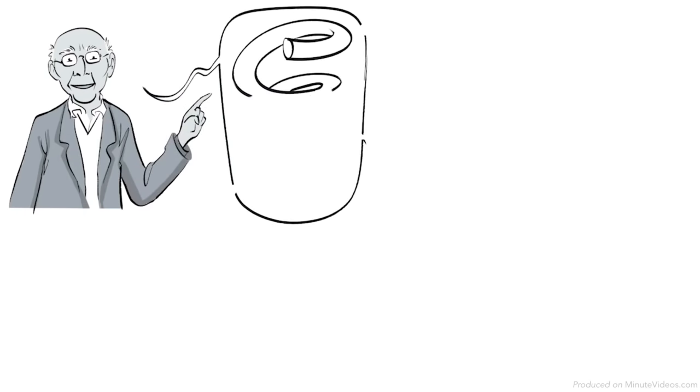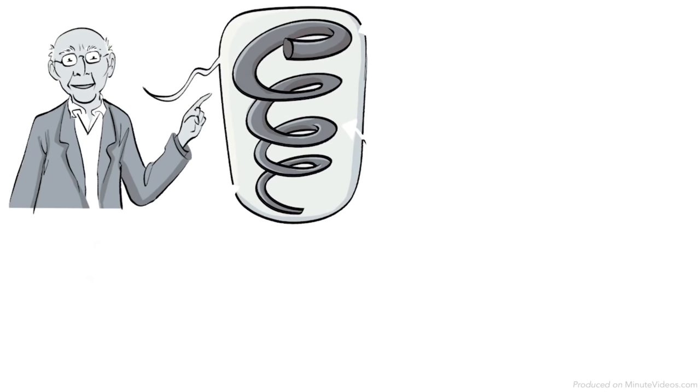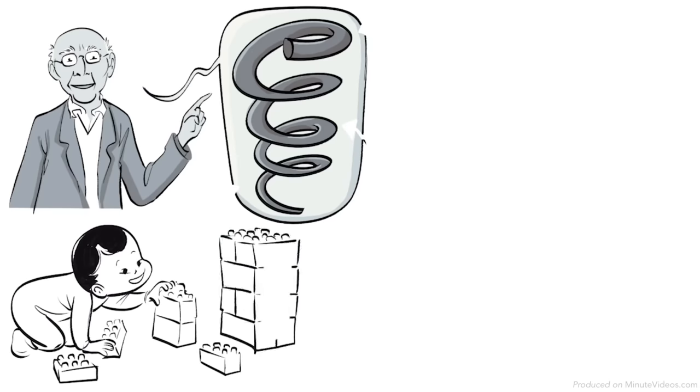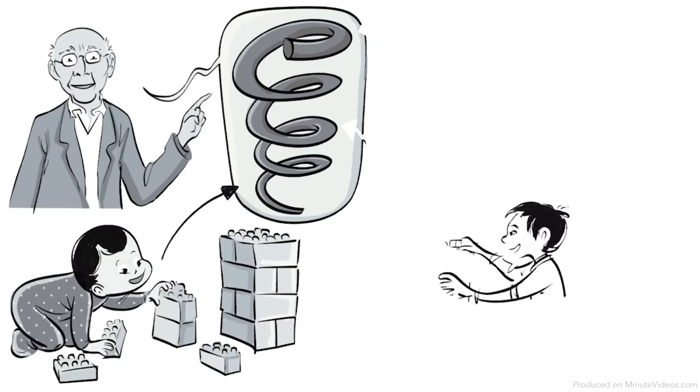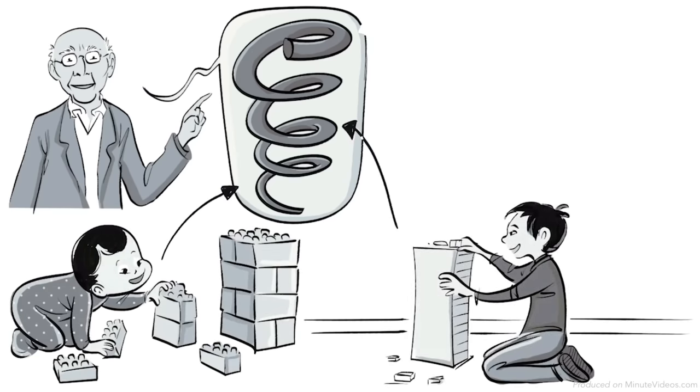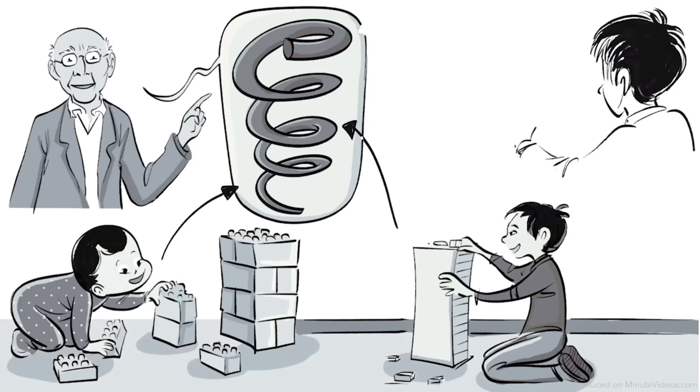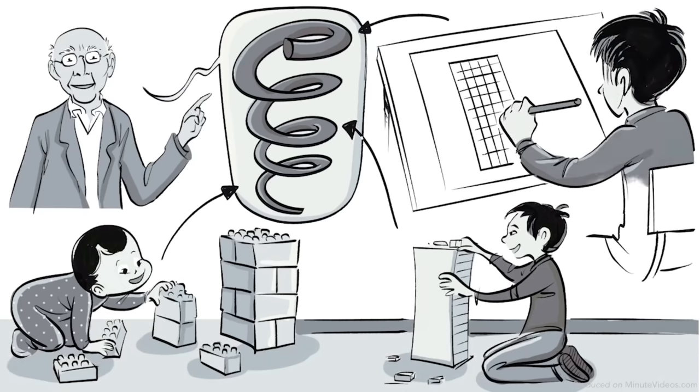Bruner therefore advocated for the use of spiral curriculum, with continuous repetition of the same fundamental ideas. The curriculum is comprised of three characteristics: students revisit the same topic at regular intervals, the complexity of the topic increases with each revisit, and the new learning has a relationship with previous learning.